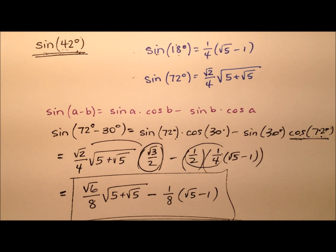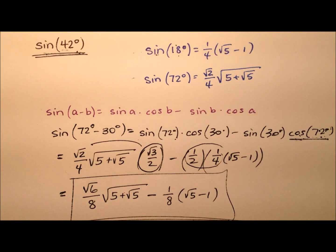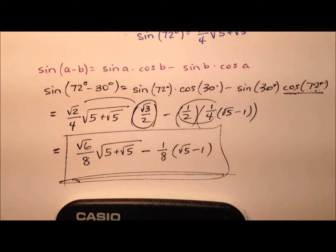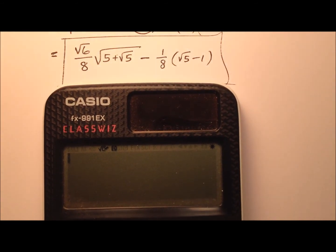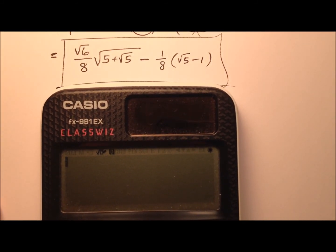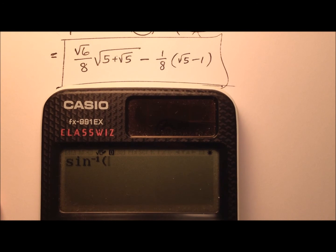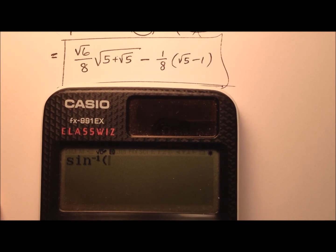So let's go ahead and grab a calculator, we'll plug it in and ensure that sine of 42 is actually going to be this expression. So here's our calculator, we'll just push everything up a little bit. So what I'm going to do is go ahead and say inverse sine, and then we're going to put this value in and see if we get 42 degrees.